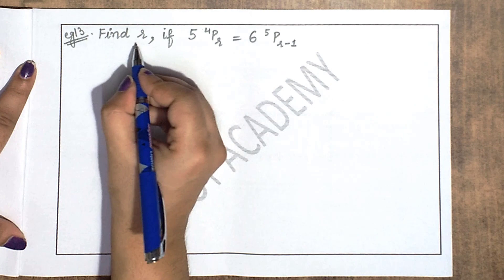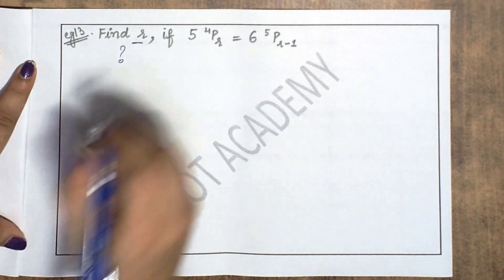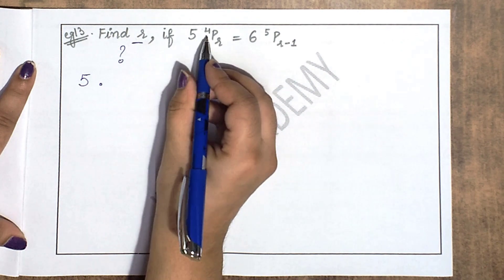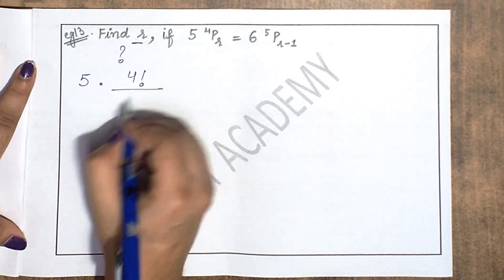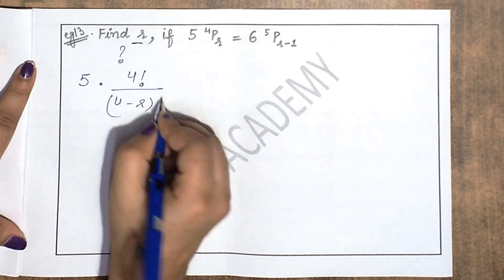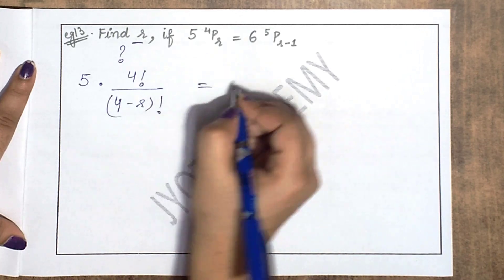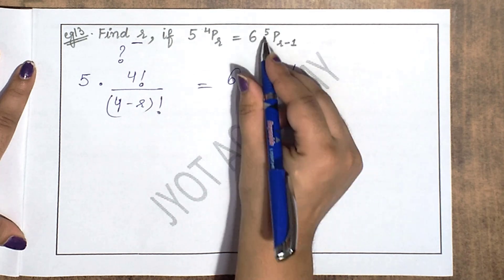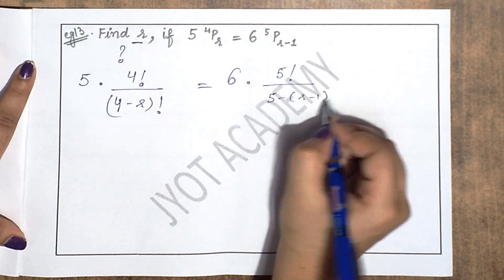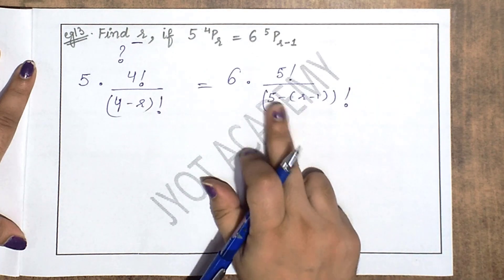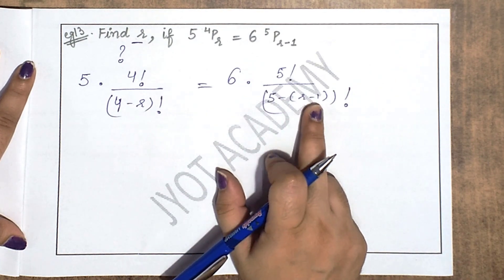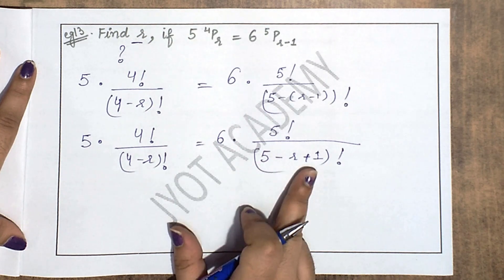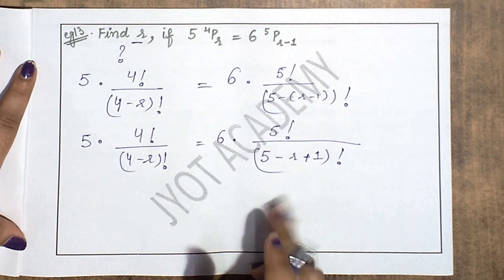Example 13 mein r ki value find karni hai. Given equation mein 5 × 4Pr hai aur 6 × 5P(r−1) hai. 4Pr = 4! / (4−r)! aur 5P(r−1) = 5! / (5−(r−1))! = 5! / (6−r)! ko open karenge.